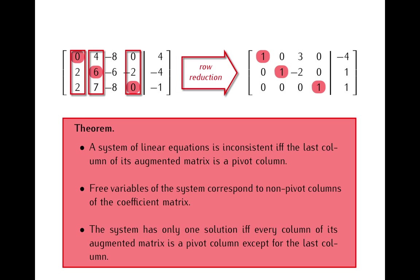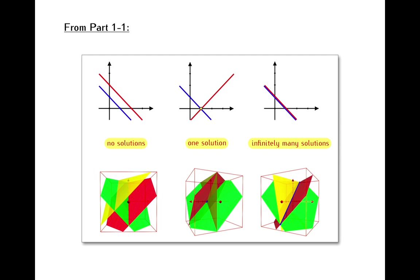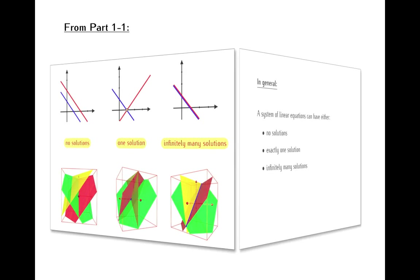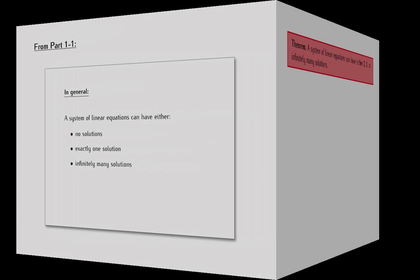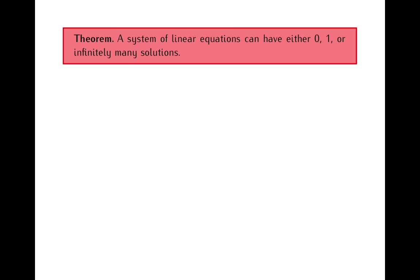It is now a good moment to take care of one unfinished piece of business that relates to systems of linear equations and their solutions, something that goes back to the first part of these lectures. As you may remember, in that first part I showed you, using geometrical arguments, that systems of linear equations in either two or three variables can have either zero, one, or infinitely many solutions. I said that later I would show you that the same thing applies in general to all systems of linear equations regardless of the number of variables. We are now ready to state this as a theorem: any system of linear equations can have either zero, one, or infinitely many solutions.